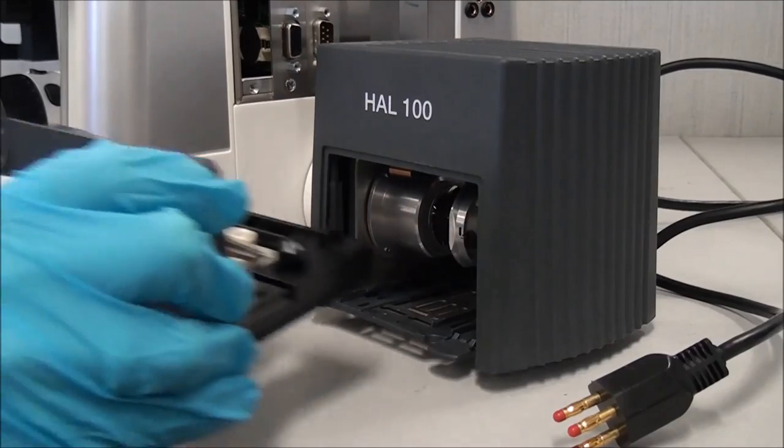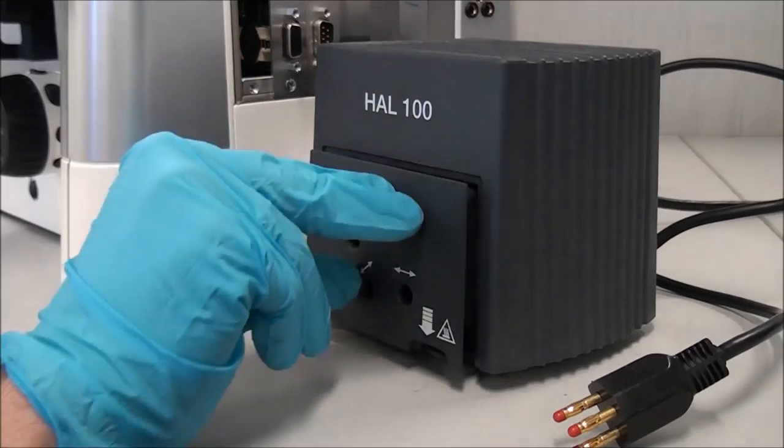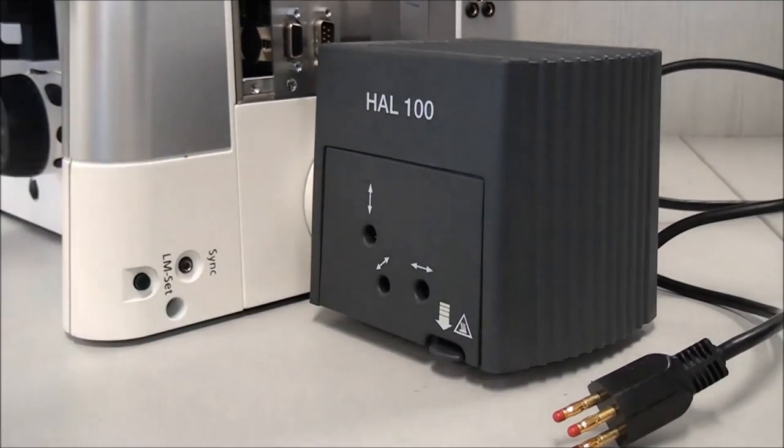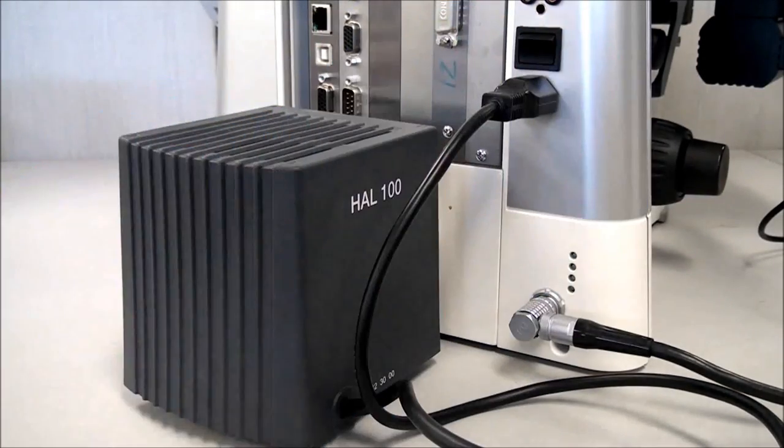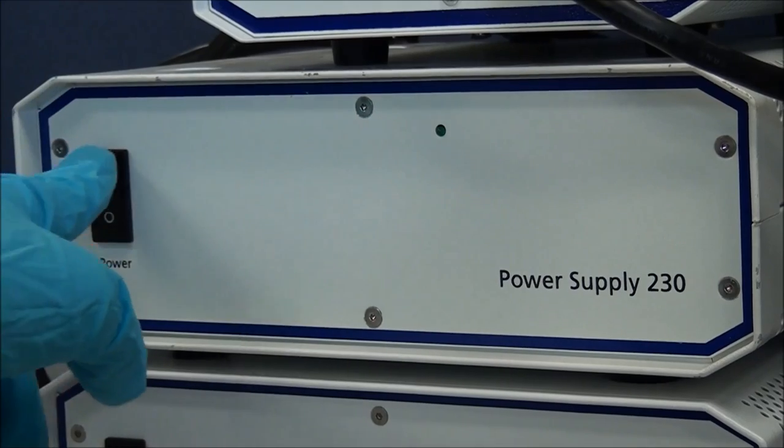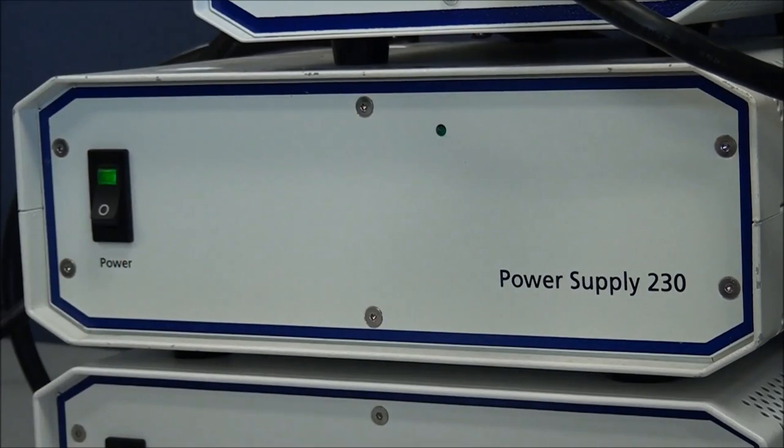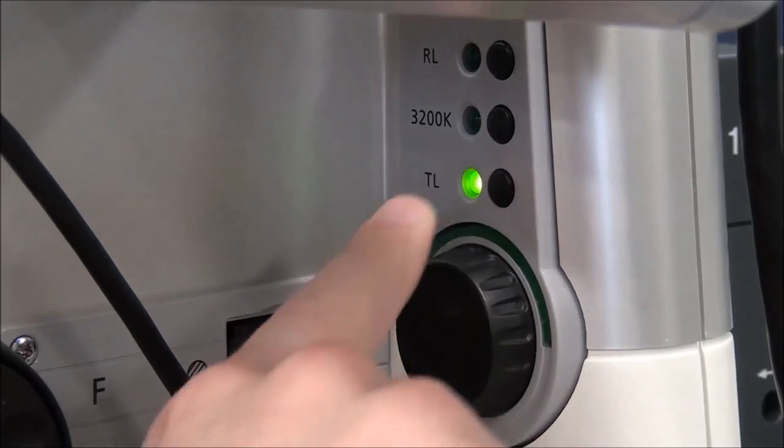Slide the lamp tray back into the lamp housing until it audibly clicks into place. Fully reconnect the three-prong plug for the halogen lamp into its former location. Turn the microscope back on and turn the lamp intensity up.